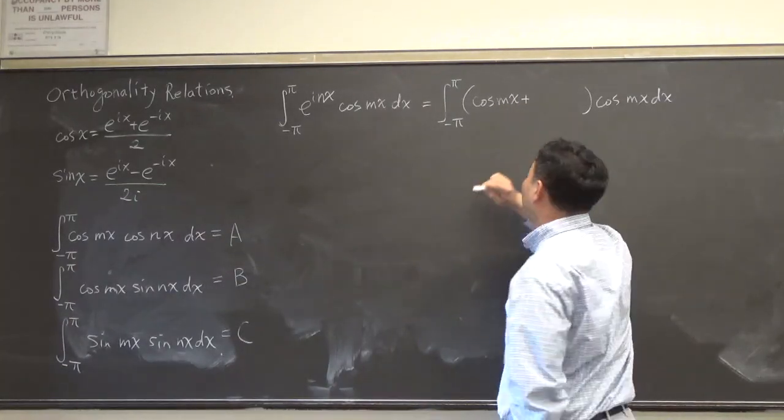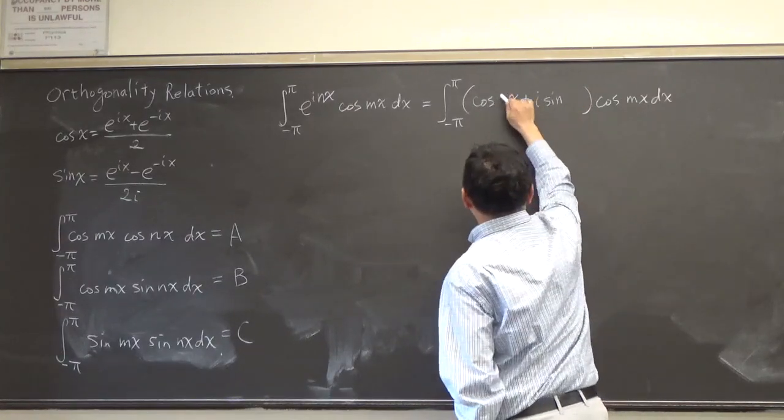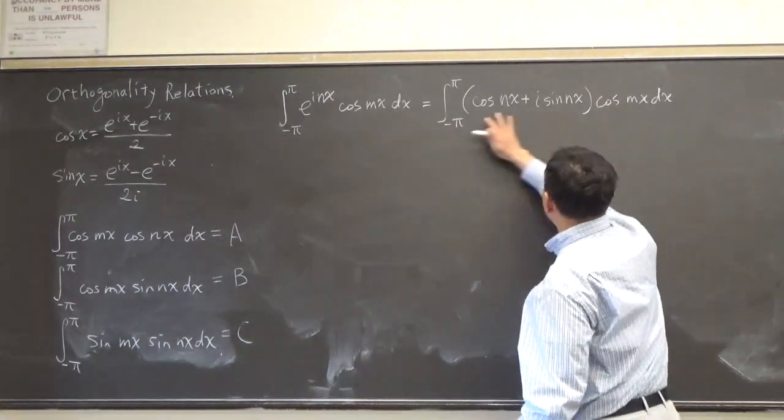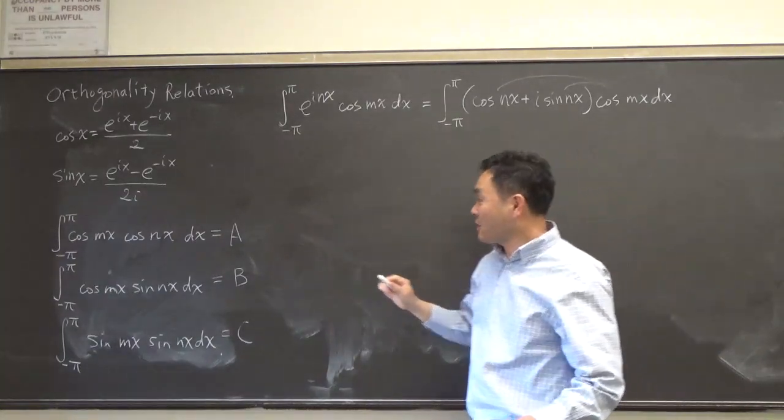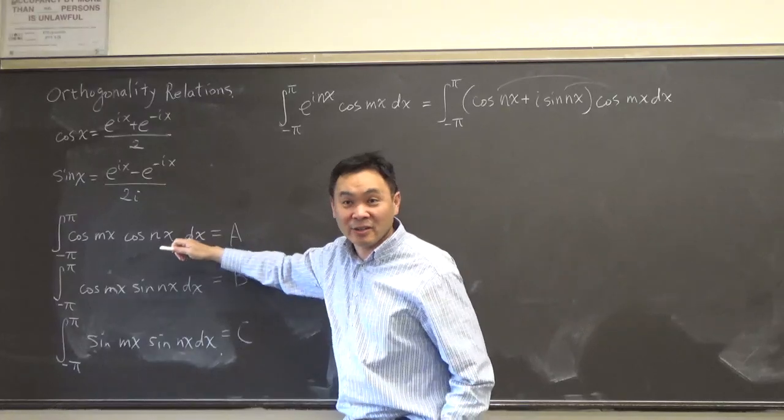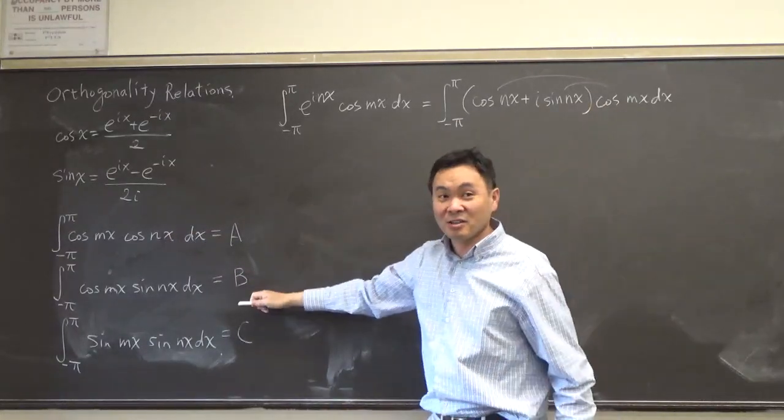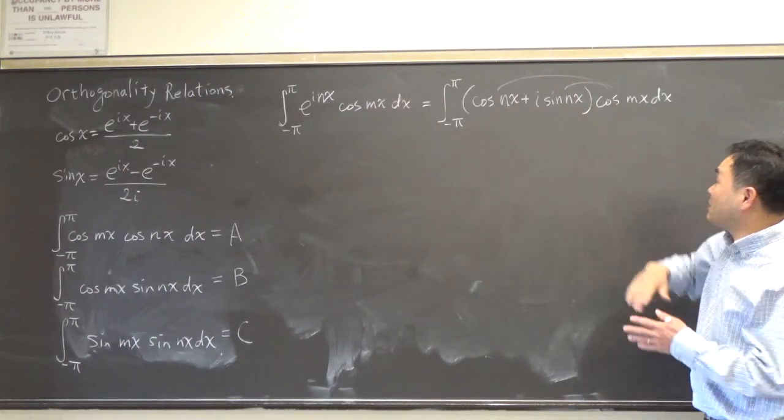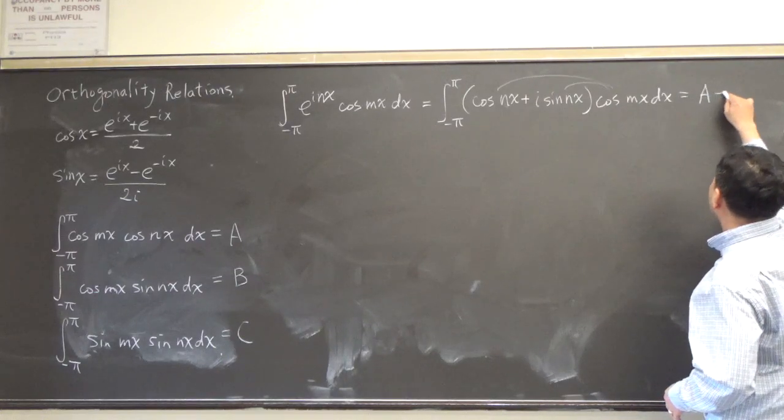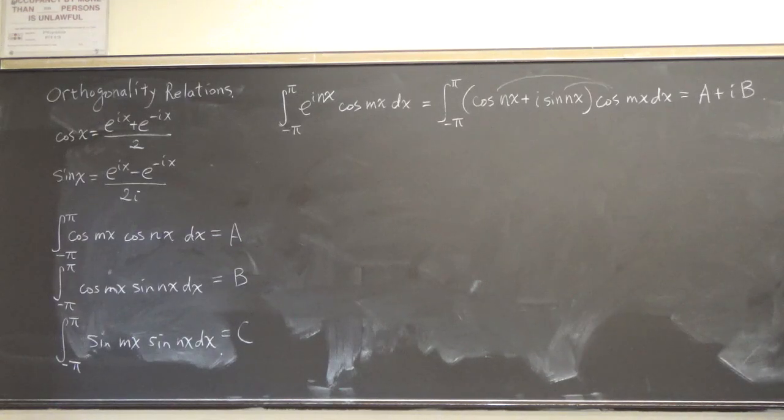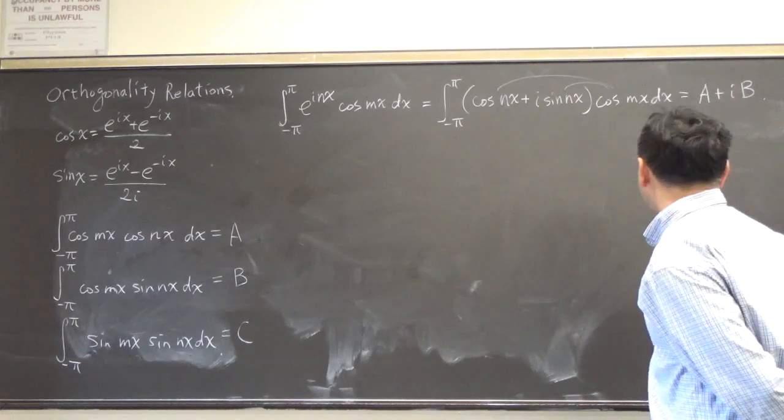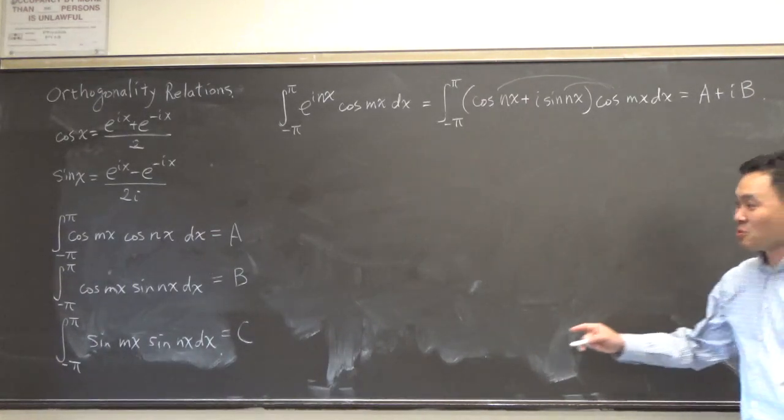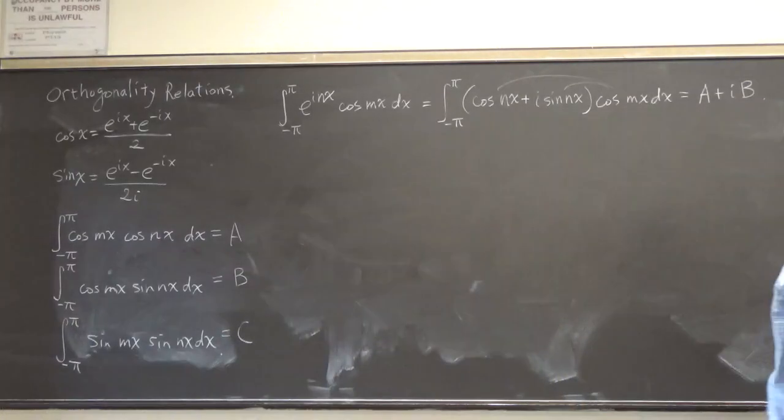Plus? Plus i sine nx, okay. All right. So that's all we have. And then if you switch this around and then multiply, you see that this times this would be A, right? So we immediately see that if you expand this, this is going to be equal to A plus i times B. So it's like killing two birds with one stone. You can settle these two integrals just by one integral, which is kind of nice, right? Okay. So let's actually do it.